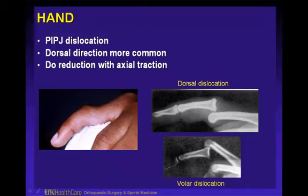You also want to follow them for range of motion. They can return to the game with buddy taping, but sometimes they will develop a boutonniere deformity. This is an important injury to treat acutely with splinting and making sure they regain their extension range of motion.